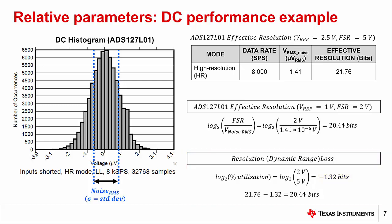SNR and effective resolution, like most noise parameters identified so far, are relative. They will always have to be defined in relationship to some absolute values such as reference voltage, making it challenging to compare specs among different ADCs. This might cause you to wonder: is there such a thing as an absolute noise parameter?